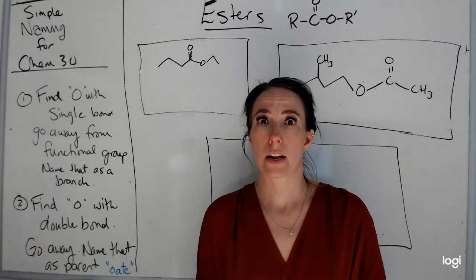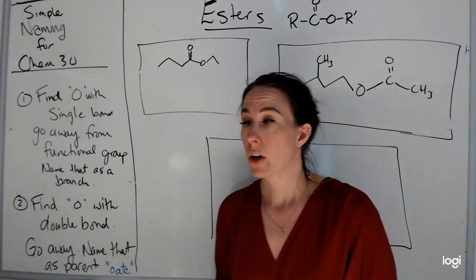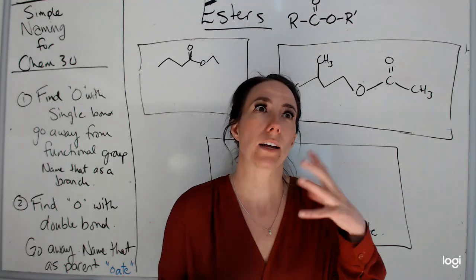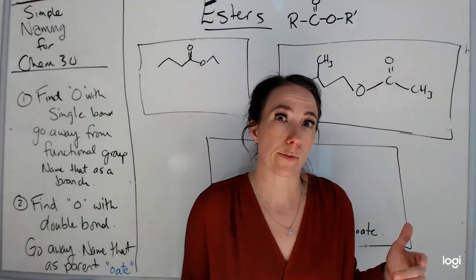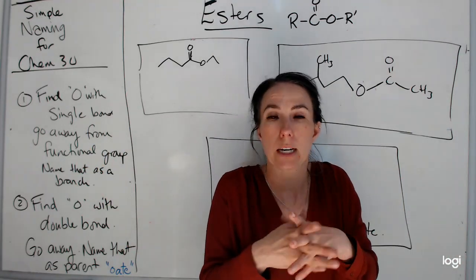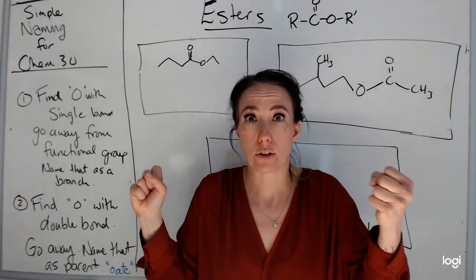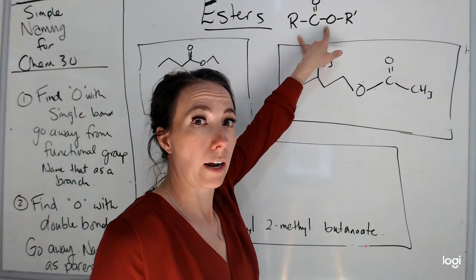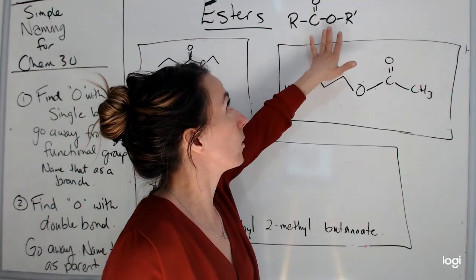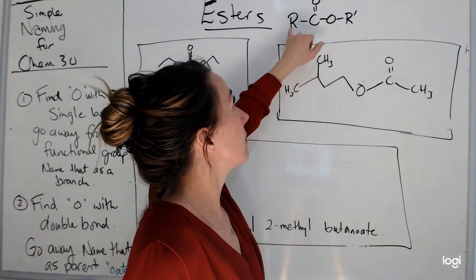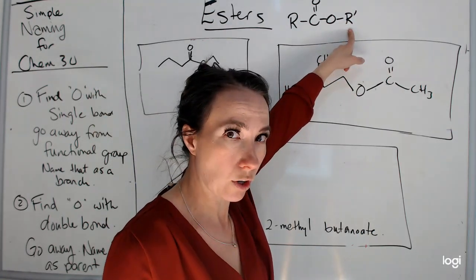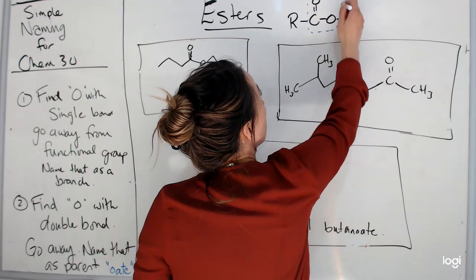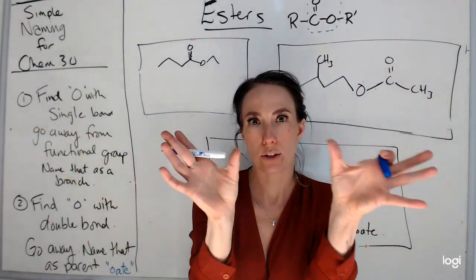The last of the hydrocarbon derivatives in Chem 30 are esters. Esters have a functional group that is kind of like both an alcohol (–OH) and a carboxylic acid (C=O–OH) at the same time, because in order to make an ester you take an alcohol and a carboxylic acid and put them together. The functional group for an ester is R–C(=O)–O–R', where R' just means the second hydrocarbon isn't necessarily the same as the first. We call this an ester linkage because it links two hydrocarbons together.